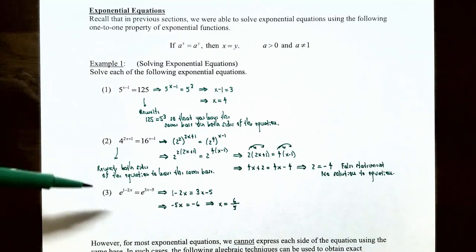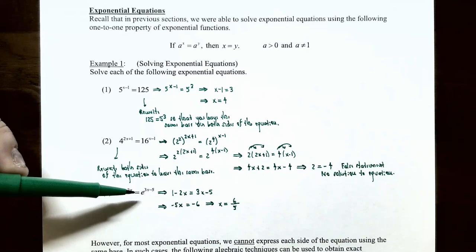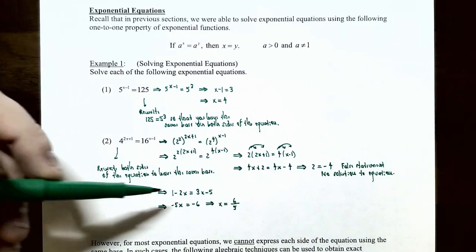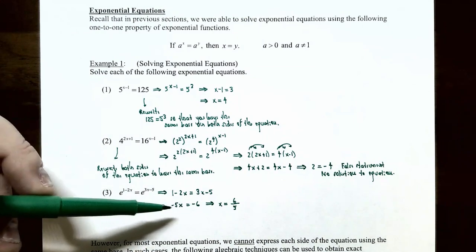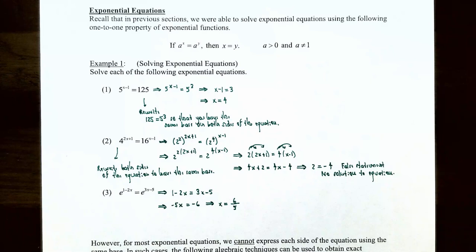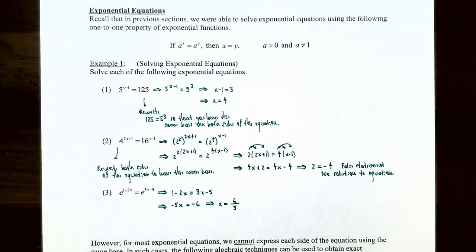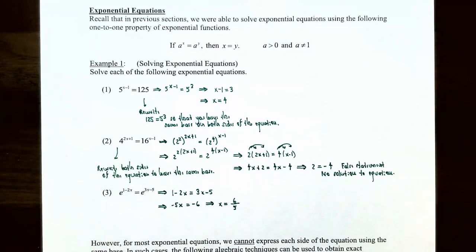Number three: base e to the exponent one minus two x equals base e to the exponent three x minus five. Both sides are already base e, so no rewriting is needed. Setting the exponents equal: one minus two x equals three x minus five. Isolating x gives negative five x equals negative six, so x equals six fifths. That is the solution — substituting x equals six fifths makes both sides equal.